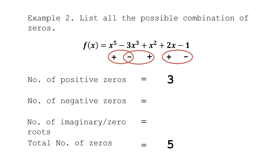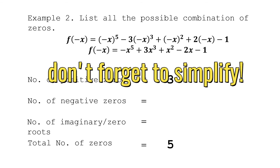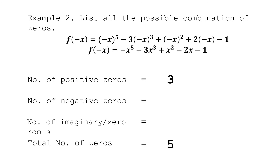For the negative zeros, substitute −x to get f(−x). We have (−x)⁵ + 3x³ + x² − 2x − 1. Simplify first before identifying the signs. The signs are: negative, positive, positive, negative, negative. Counting variations: negative to positive is one variation, positive to positive is no variation, positive to negative is another variation, and negative to negative is no variation. So the total number of negative zeros is equal to 2.